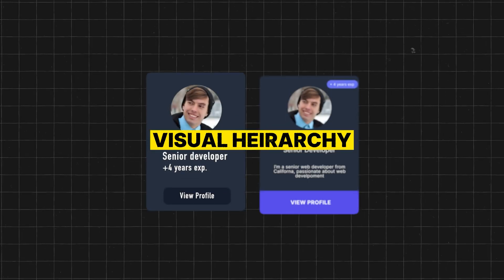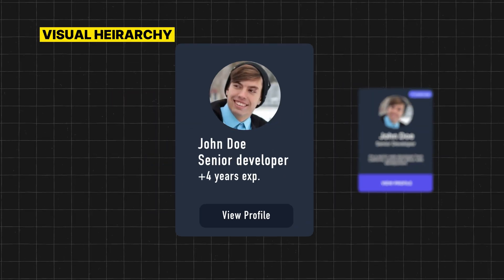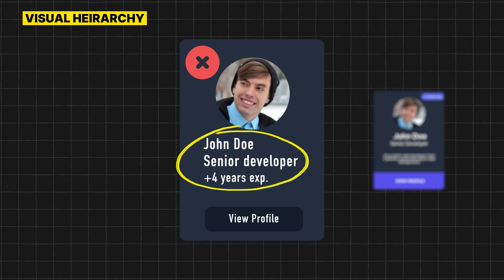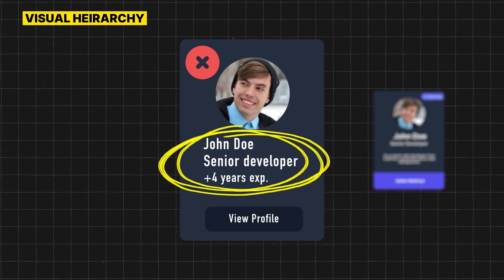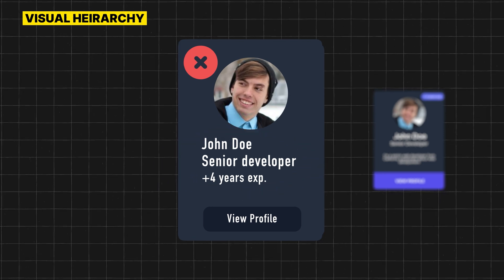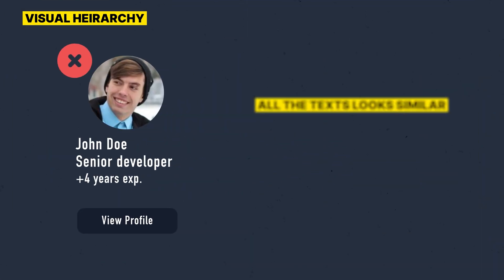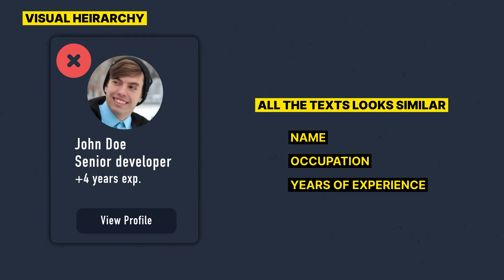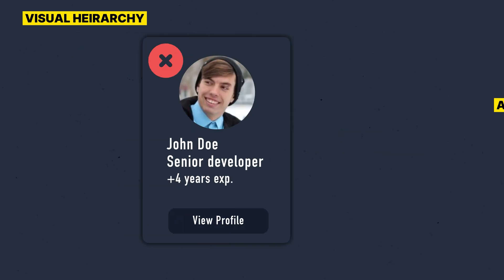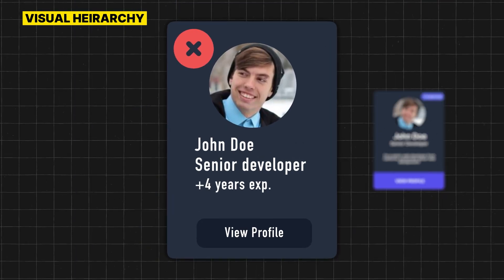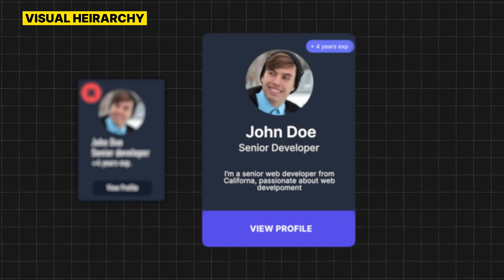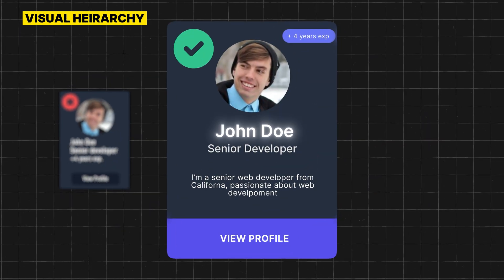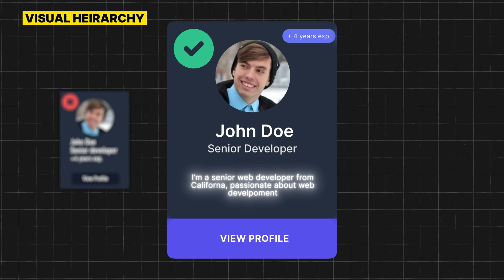The first one is by ranking elements. On the left, we have a design that doesn't provide any visual cue on which things users should pay more attention to. All the text looks similar — the name, the occupation, the years of experience. As you can already tell, this makes it hard for the user to find the information they are looking for faster. On the right, we fix this problem by providing a clear hierarchy on the text we want the users to read.